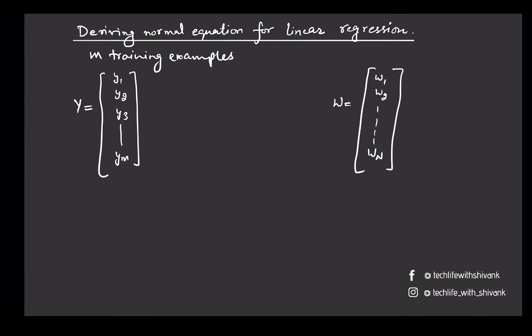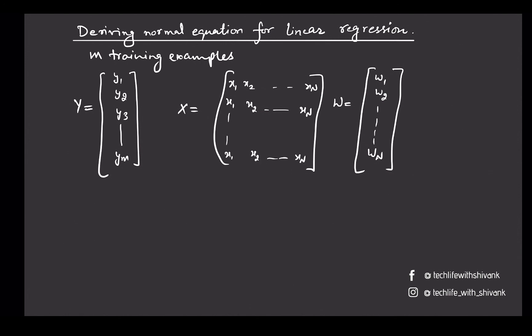We are assuming capital N weights because we are assuming that we have capital N feature vectors. Those feature vectors are stored in the capital X matrix such that the first row contains the feature vectors for the first example, the second row contains the N features for the second example, and the mth row contains the feature vectors for the mth training example. We have capital N such feature vectors.